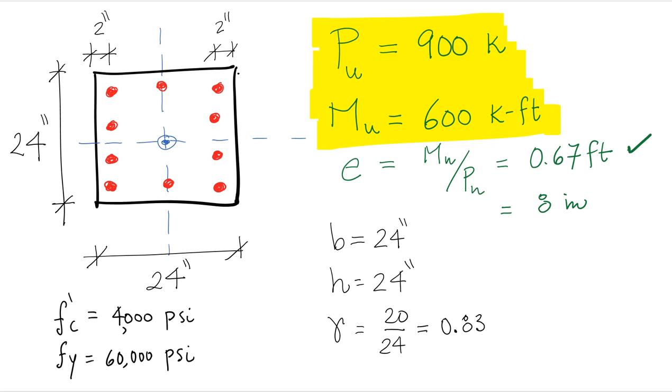We're going to start with a preliminary sizing of the column, 24 inches by 24 inches. This gives us two of the dimensions we need.